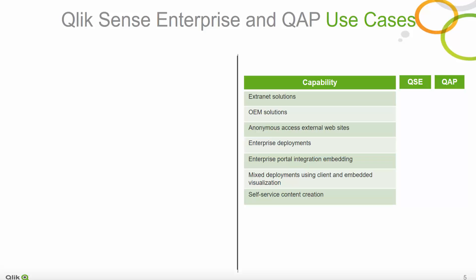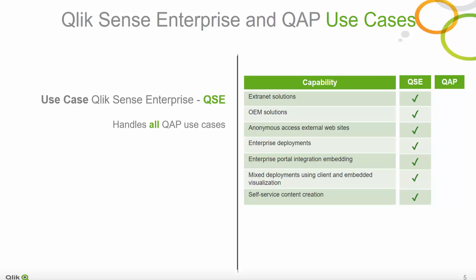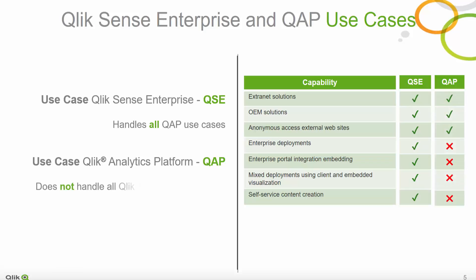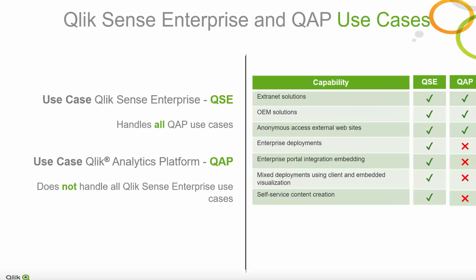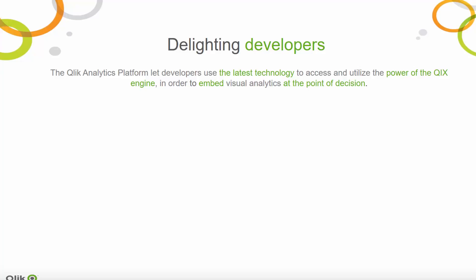QAP is intended for Extranet and OEM offerings, where large numbers of users will access a QAP-enabled website for short to medium periods of time — in other words, high concurrency with low duration. Think guided dashboards with mild interactivity. QAP is not intended for enterprise deployments where named users will perform self-service discovery; that is a Qlik Sense Enterprise use case. The Qlik Analytics Platform provides developers the ability to access and utilize the power of the Qix engine in order to embed visual analytics.